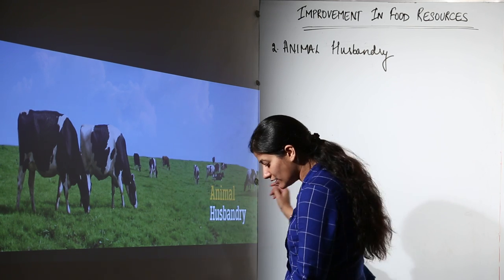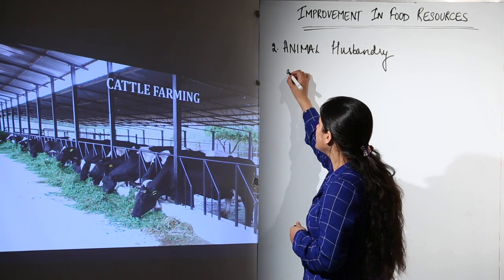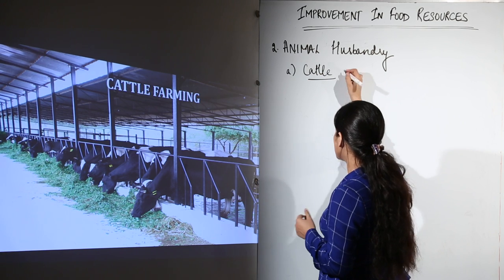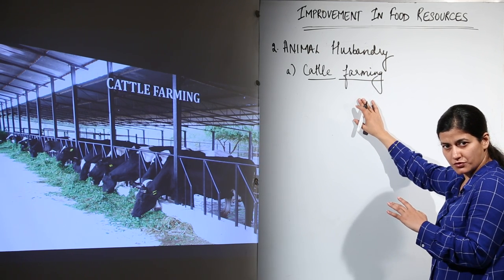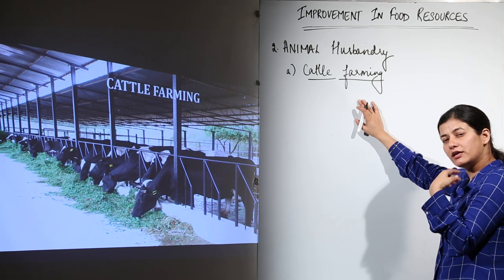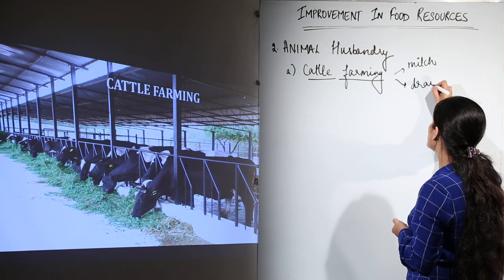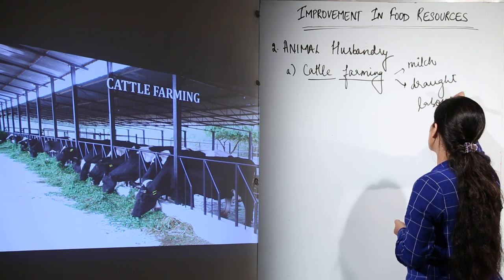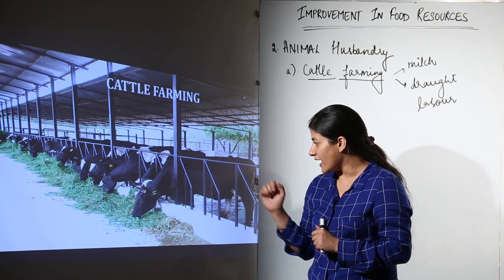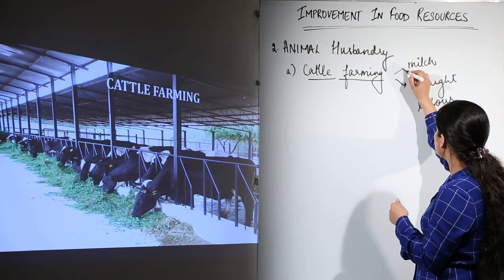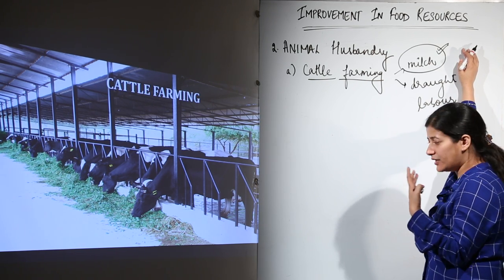What you see here is a ranch with cattle feeding. The first topic we are going to study in animal husbandry is cattle farming. Our cattle is used for two purposes: one is milk cattle, and the other one is draught cattle — used for plowing and other labour purposes. In cattle farming, meat production is also done from cattle and consumed as food.